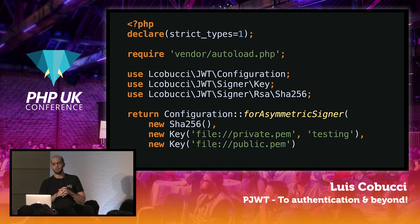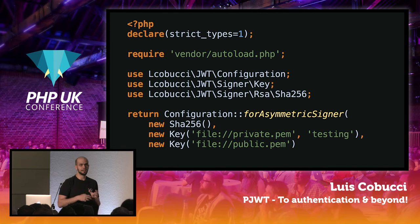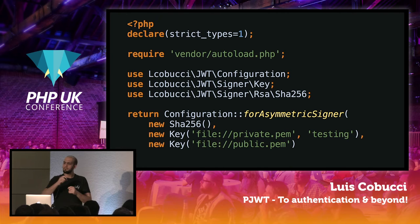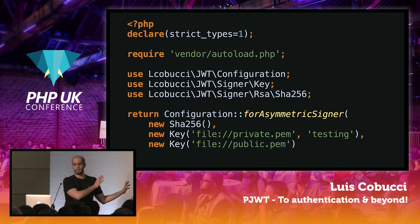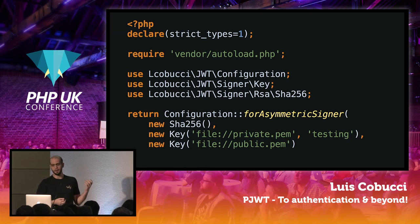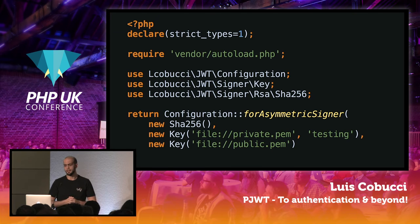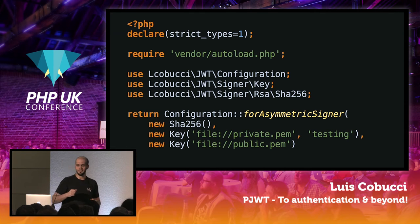Everything starts with a configuration, which is used as a small dependency injection container because objects like the builder or the parser have some dependencies. If you were to pass these dependencies directly, it can get very complicated. This configuration will hold the validator, the builder, and the parser. Here we're building a configuration for an asymmetric signer using RSA, and you just pass two keys because it's asymmetric. We'll talk about this in a few moments — you specify the private key and the public key.